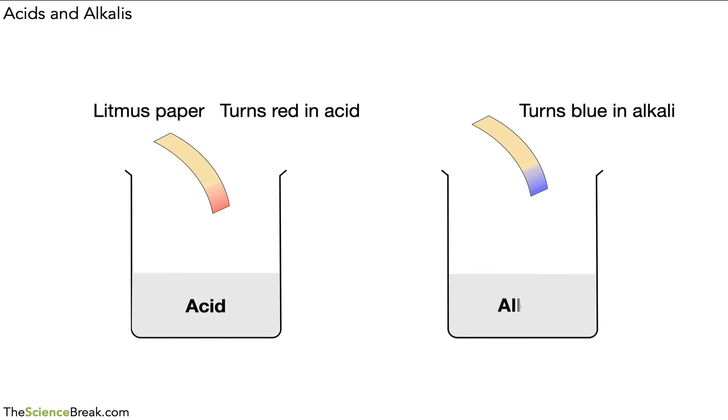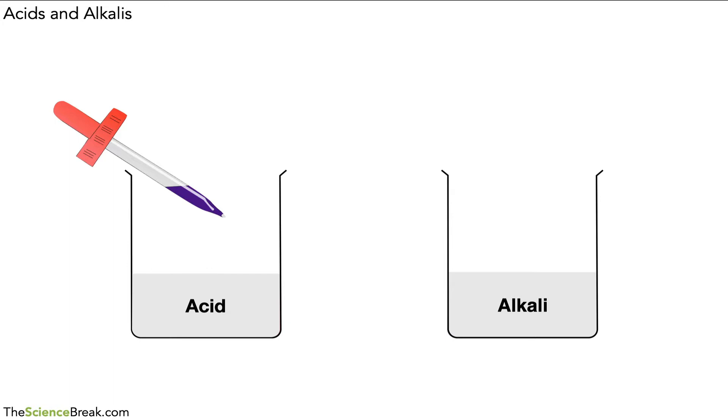We can use a different method to figure out how strong or weak an acid we have. Again here we have our two containers. We now know that one is acid and one is alkali, but we use something slightly different. We use something called an indicator, and in this example here we've got something called universal indicator.